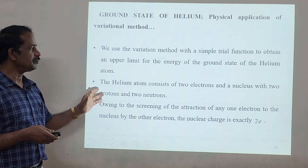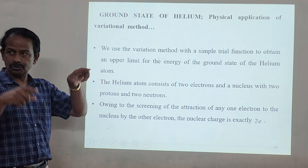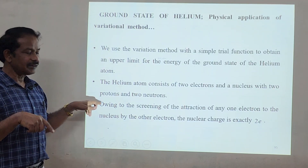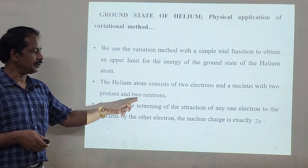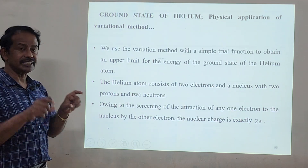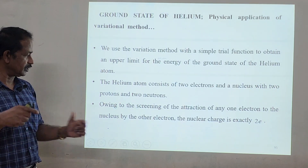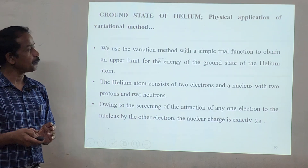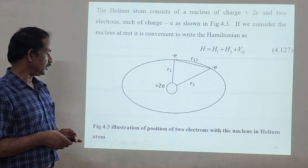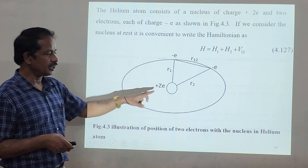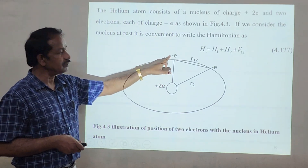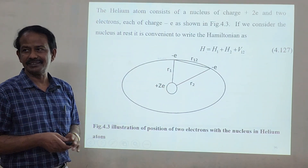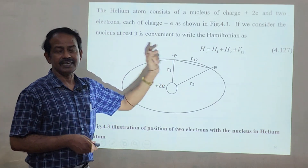The helium atom consists of two electrons — essentially two hydrogen atoms combined together. We have two electrons and a nucleus having two protons and two neutrons. The nuclear charge is exactly given by 2e. You have a nucleus, one electron, and another electron — one for each hydrogen atom.